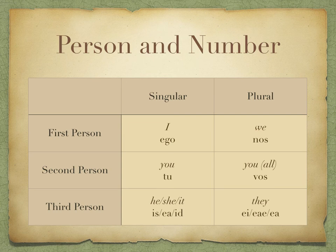Finally, third person. You'll often see this using a person's name or a noun rather than a pronoun. But the pronouns he, she, it — is, ea, id — and they — ei, eae, and ea — also exist in Latin.